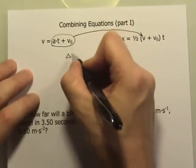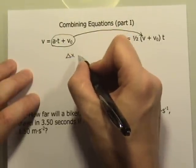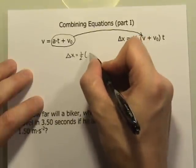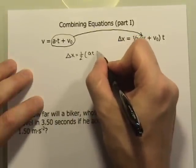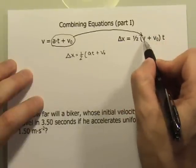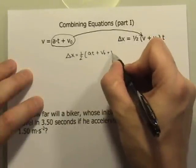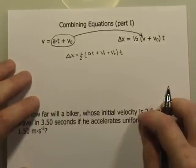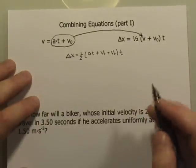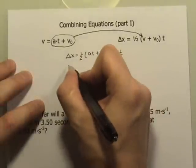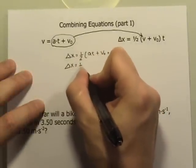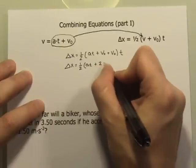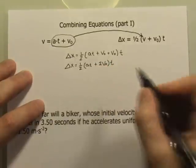Delta x, the displacement, will be equal to one half. I'm going to replace v, so in the parentheses I'm going to have at plus v-naught — that's this part — plus v-naught again, times t. Let's clean up what's going on inside the parentheses: delta x is equal to one half times (at plus two v-naught) times t.